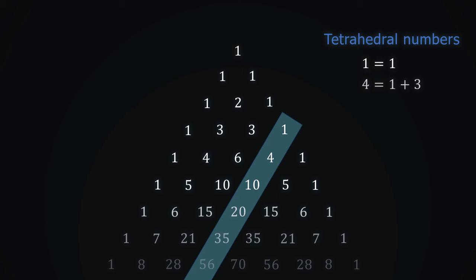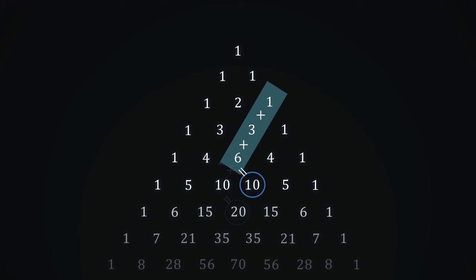We see that they are also the sum of the previous triangular numbers. So 1 equals 1, 4 equals 1 plus 3, 10 equals 1 plus 3 plus 6, and so on. These are tetrahedral numbers, named because they can be represented as a tetrahedron. We can see this fact in Pascal's triangle in the same way we did before.